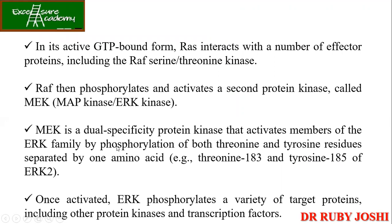Active RAS-GTP interacts with RAF, which is a serine-threonine kinase. RAF phosphorylates and activates another protein kinase called MEK — MAP kinase/ERK Kinase. MEK is a dual-specificity protein kinase. It then activates members of the ERK family by phosphorylation. Each step you can see is happening with the help of phosphorylation.